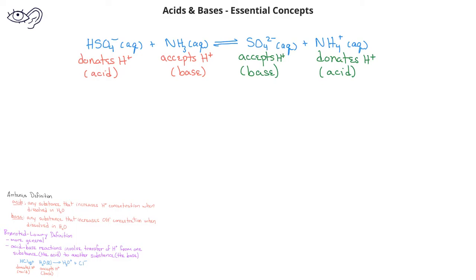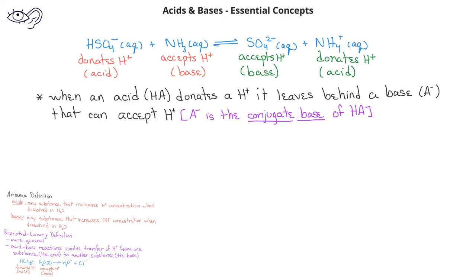When any acid HA donates a proton, it leaves behind a base, A-, that can accept a hydrogen ion or act as a base. In this case, the HSO4- on the reactant side acts as an acid, and when it loses a hydrogen ion, it leaves behind the base SO42-.